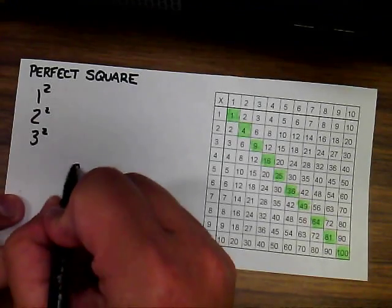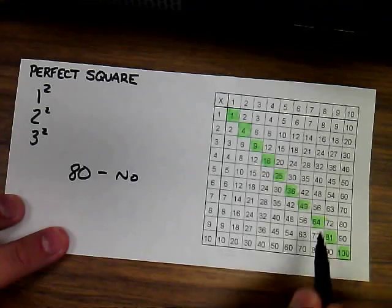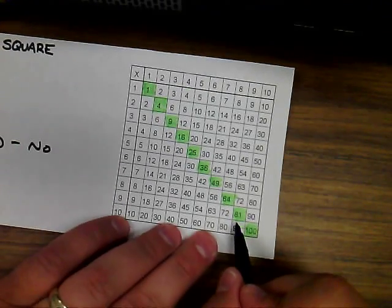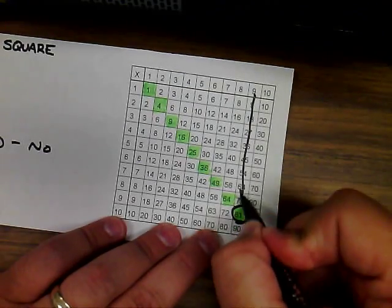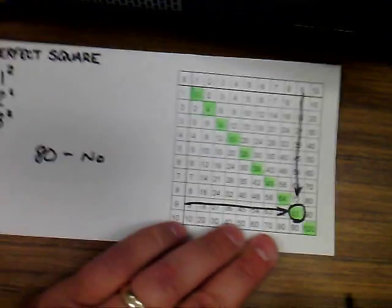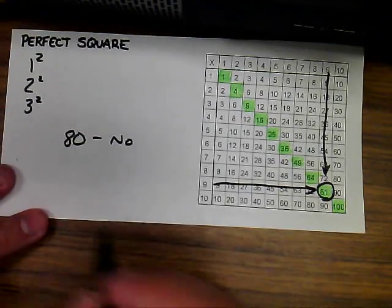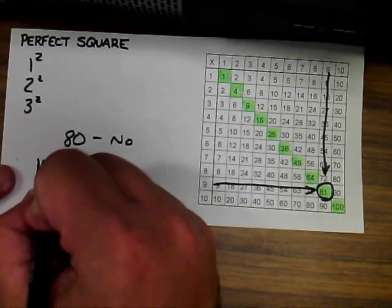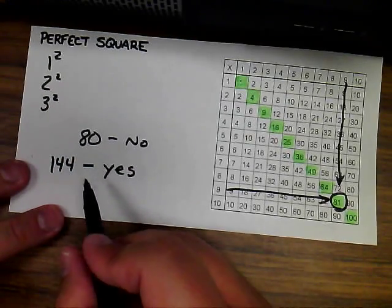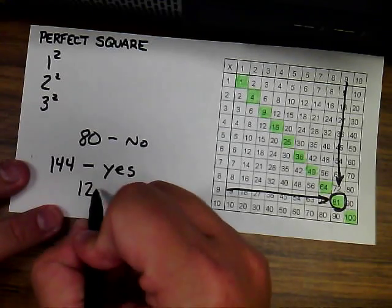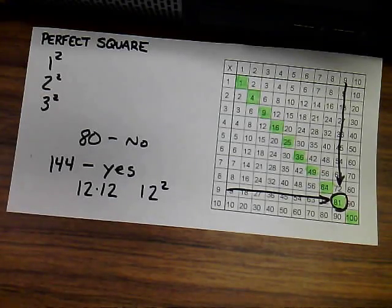So if I asked you if the number 80 was a perfect square, the answer would be no, because 80 is not one of these highlighted numbers. 9 times 9 equals 81. There's no number that can be multiplied by itself to equal 80. So if I asked you if the number 144 is a perfect square, you'd say yes, because 144 could be solved by doing 12 times 12, or 12 to the second power.